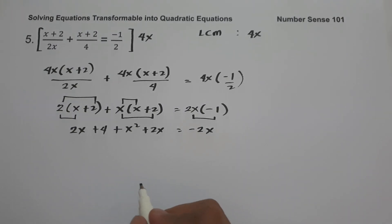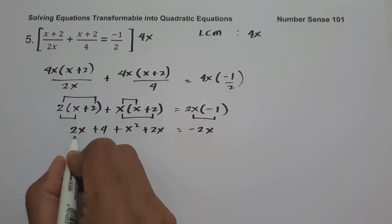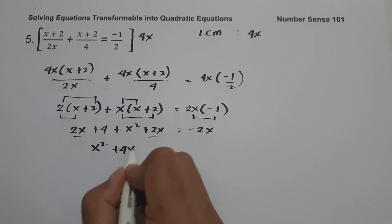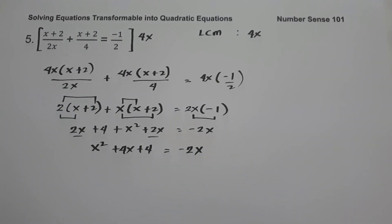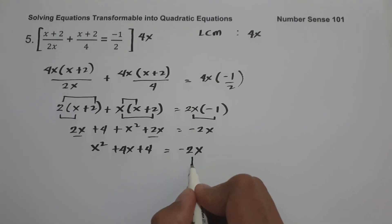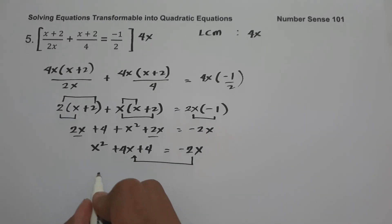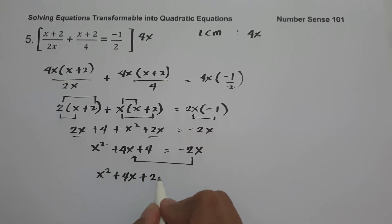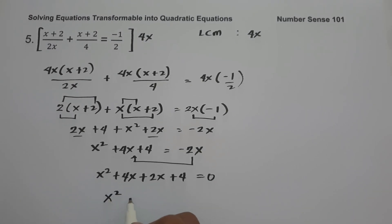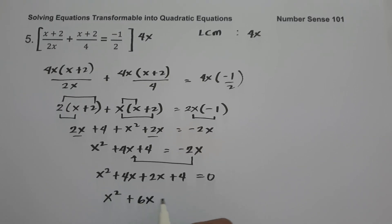Combining like terms: x squared, then 2x plus 2x is 4x, plus 4 equals negative 2x. Moving negative 2x to the other side gives x squared plus 4x plus 2x plus 4 equals 0, which simplifies to x squared plus 6x plus 4 equals 0. Since this is not factorable, we will solve using the quadratic formula.